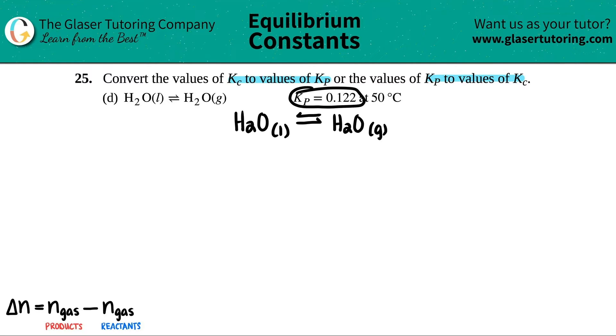Now they gave me a Kp value, so we have to just convert the Kp into the Kc value. Well, how are we going to do that? There's one equation which has Kp and Kc all in one shot. It's this formula. So I would just memorize this formula.